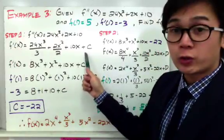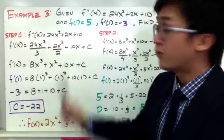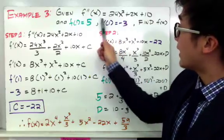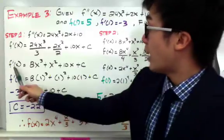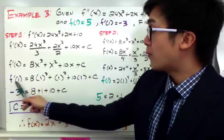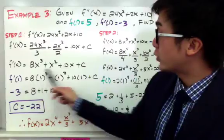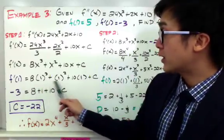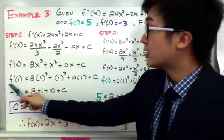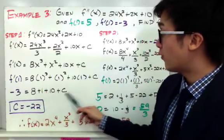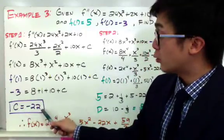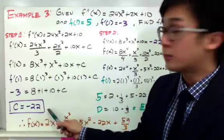Always write your constant at the end of your function when performing antiderivatives. We are given f prime of 1 equal to negative 3, and we'll use this to find f of x. So f prime of x equals 8x cubed plus x squared plus 10x plus C. Substituting x equals 1: f prime of 1 equals 8 times 1 cubed plus 1 squared plus 10 times 1 plus C. Since f prime of 1 equals negative 3, we set the expression equal to negative 3 and solve for C. C is equal to negative 22. We will use this in step 2 to find f of x.